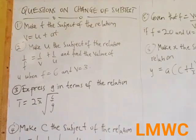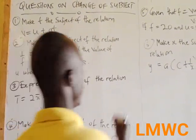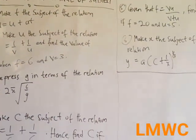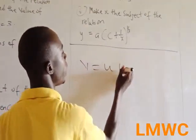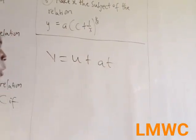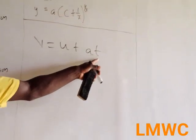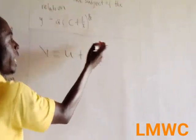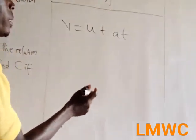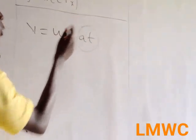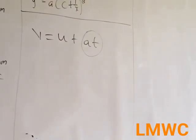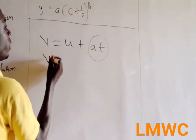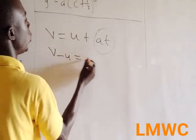Question 1: Make t the subject of the relation v = u + at. You have been asked to make t the subject, so you let t stand alone. But t is being attached to a, meaning at. Either you leave it at the left hand side or the right hand side. So this becomes v minus u equal to at.